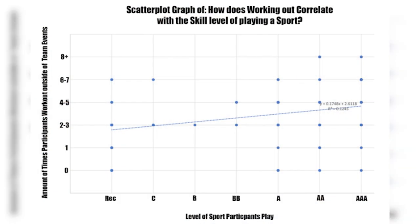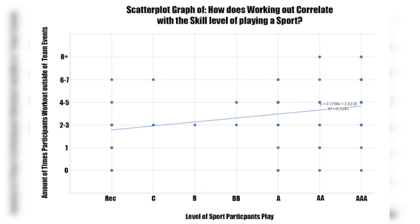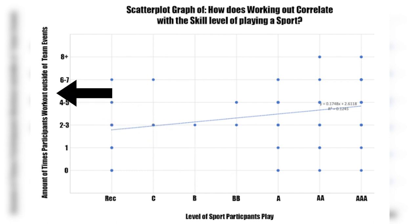I put question six on the x-axis because the level at which you play has to do with how much extra time you'll typically work out. Question three is on the y-axis because it depends on what level of sport you play. If you play at a higher level you will work out more outside of practices to maintain that competitive edge on your opponents.